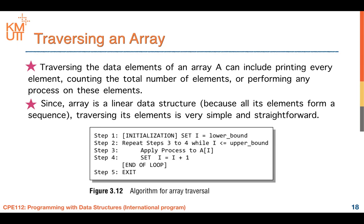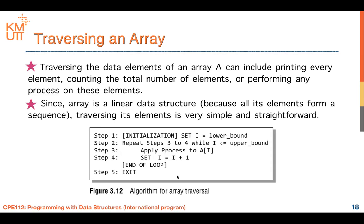Here is the algorithm for array traversal. Step one: initialize i to the lower bound. Step two: repeat steps three and four while i is less than or equal to the upper bound. Step three: apply a process to A[i]. Step four: increment i by one. Continue looping until i reaches the upper bound, then exit.